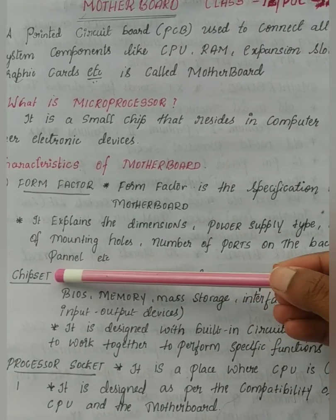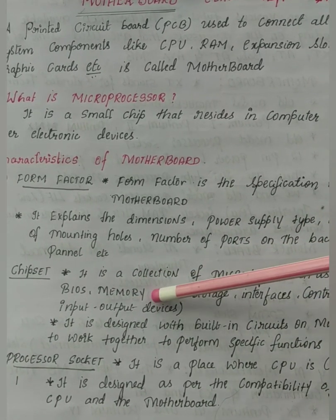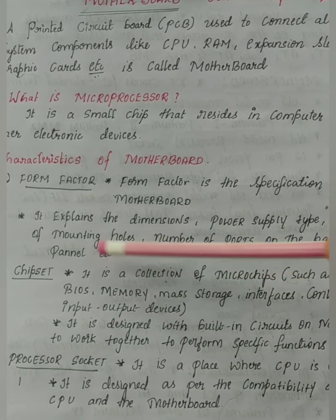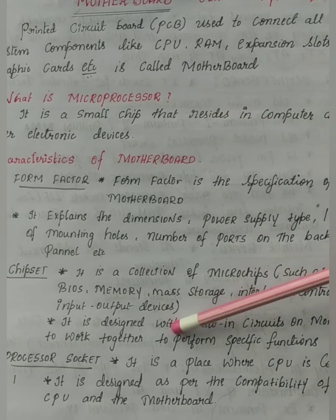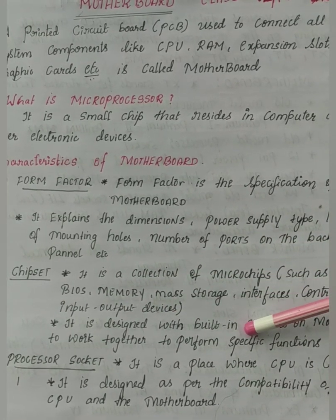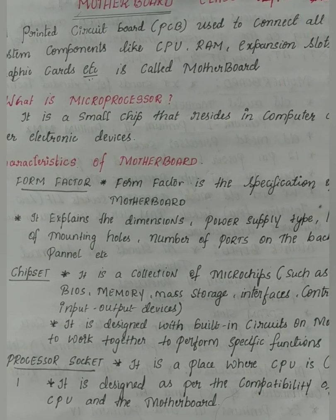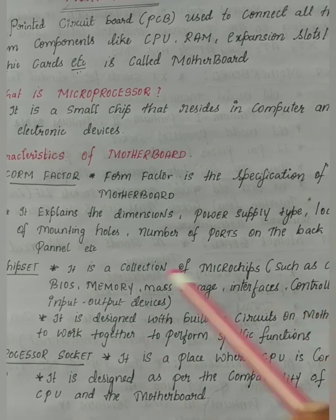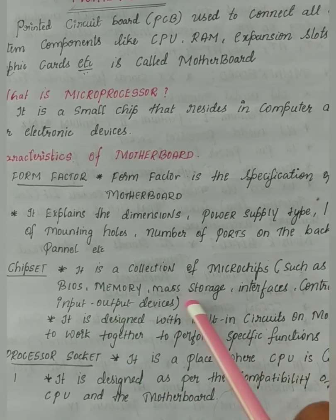The second characteristic is chipset. Just like in mathematics a set is a collection of elements, a chipset is a collection of different chips or components. It is designed with built-in circuits, meaning reserved spaces for different components to connect and perform functions. Chipset is simply a collection of microchips. We will learn about these microchips in detail in the upcoming topic on components of the motherboard.